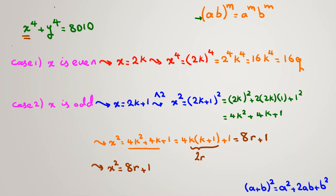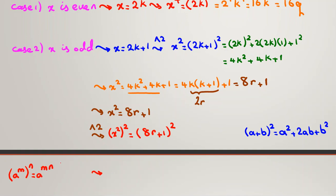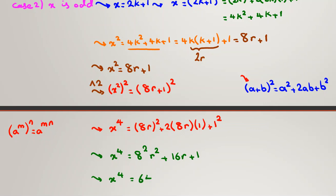Since we want x to the 4, we square this again: (x²)² = (8r + 1)². By the power rule, (x²)² = x to the 4. Expanding: (8r)² + 2·(8r)·1 + 1² = 64r² + 16r + 1. So x to the 4 equals 64r² + 16r + 1.